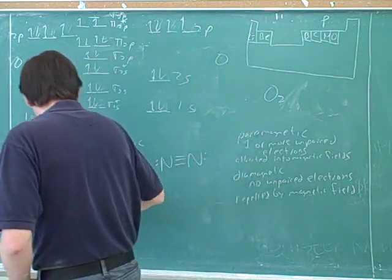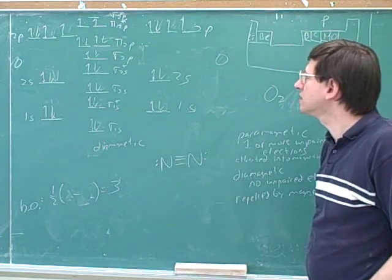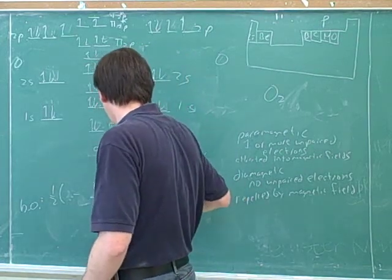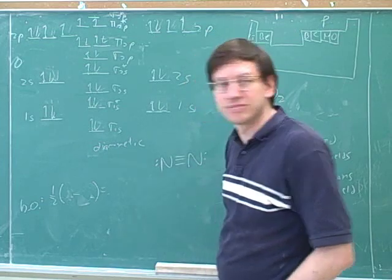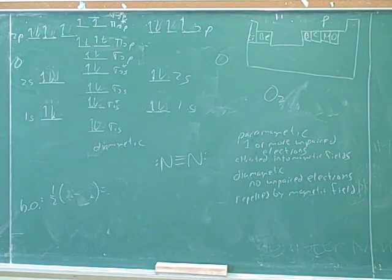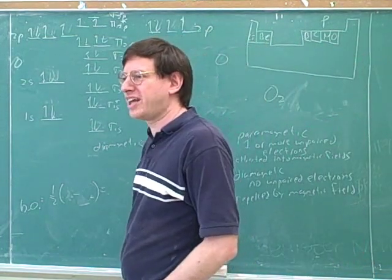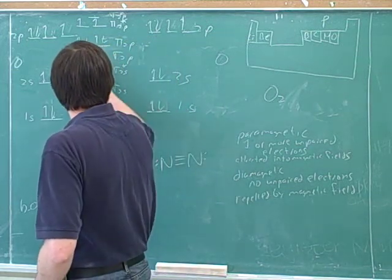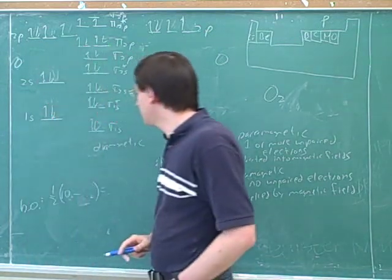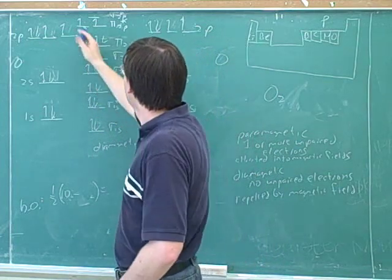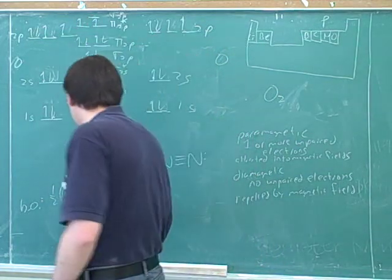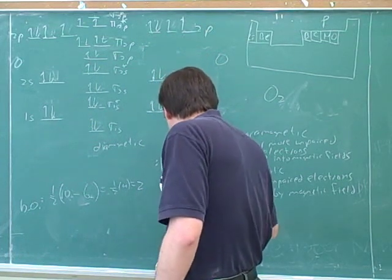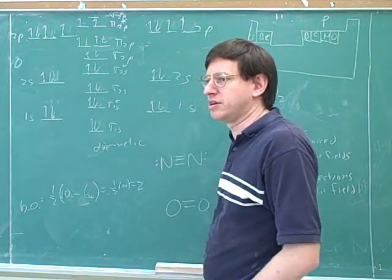Now we can figure out the bond order. How many electrons are in the bonding orbitals? Ten — 1, 2, 3, 4, 5, 6, 7, 8, 9, 10. And how many in the anti-bonding orbitals? Six — 1, 2, 3, 4, 5, 6. The fact that these are unpaired doesn't make any difference, it's still six. So that's one half of four, which is two. And if you actually drew the Lewis structure for oxygen, it does have two bonds, so those two parts of the theory are matching up.